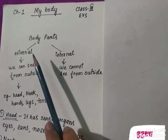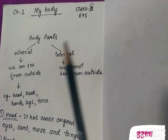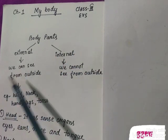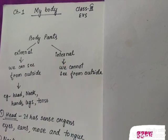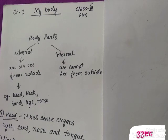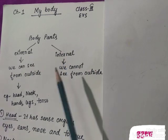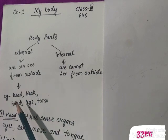First of all you have to know about the body parts. There are two types of body parts: one is external body part and one is internal body part. The body parts which we can see from outside are called external body parts, and internal body parts means the parts of our body which we cannot see from outside — that means they are inside our body.